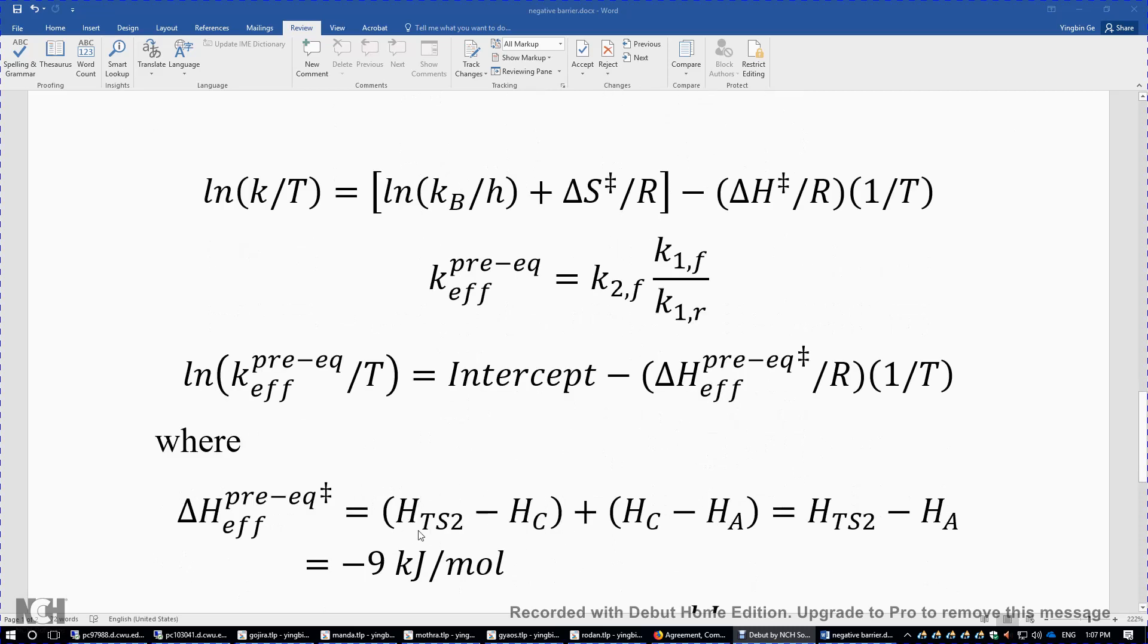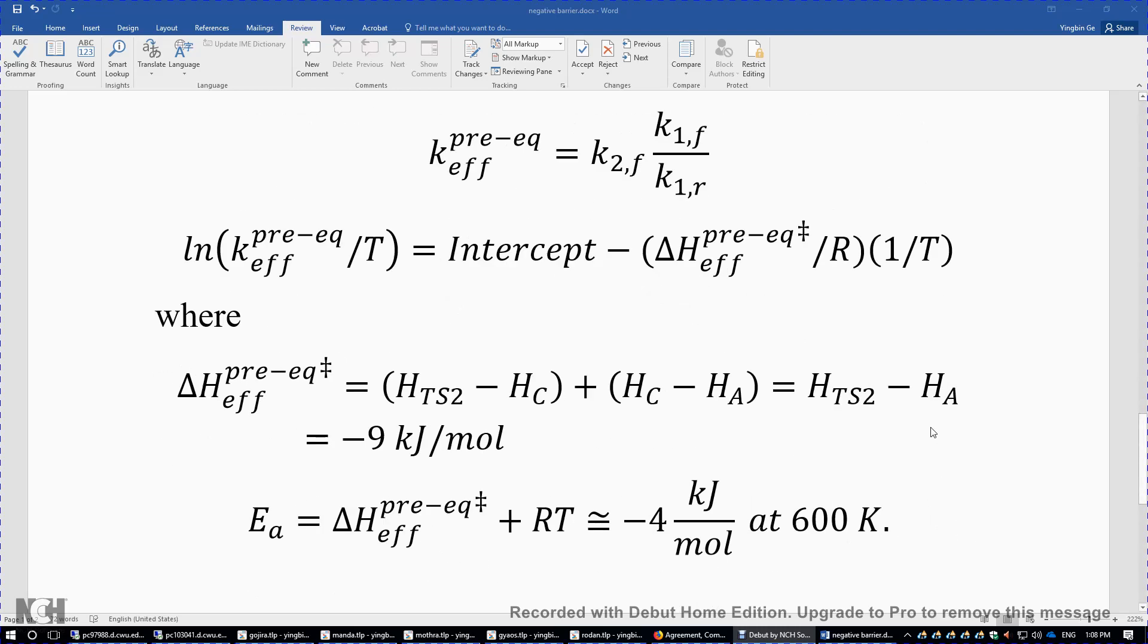This term can be expanded: the first part is from K2,f, the enthalpy of activation of the forward reaction in the second step, and HC - HA comes from the equilibrium term. If we combine these two, we find that the effective ΔH‡ using pre-equilibrium approximation equals the enthalpy of the second transition state minus the enthalpy of reactant A. In our numerical example, this is 0 minus (-9), so the effective enthalpy of activation is -9 kilojoules per mole.